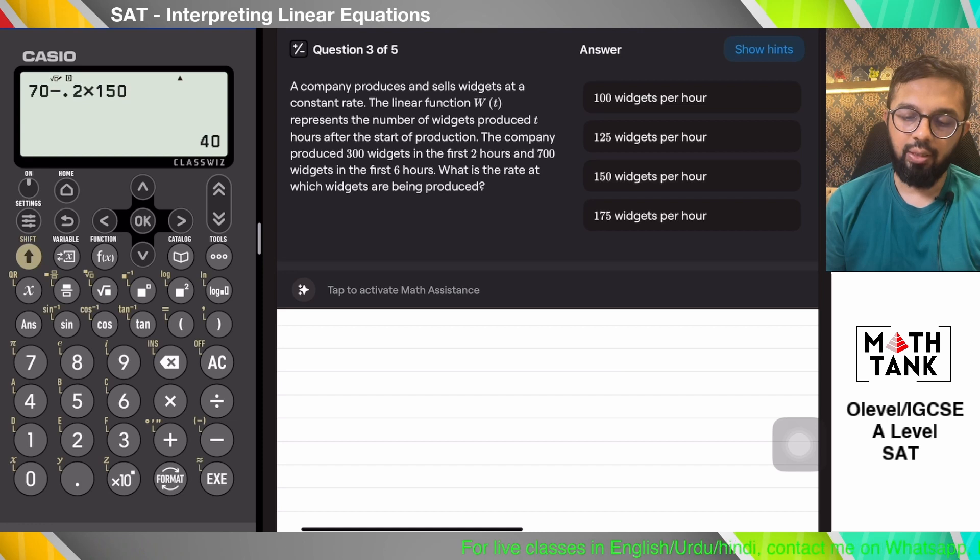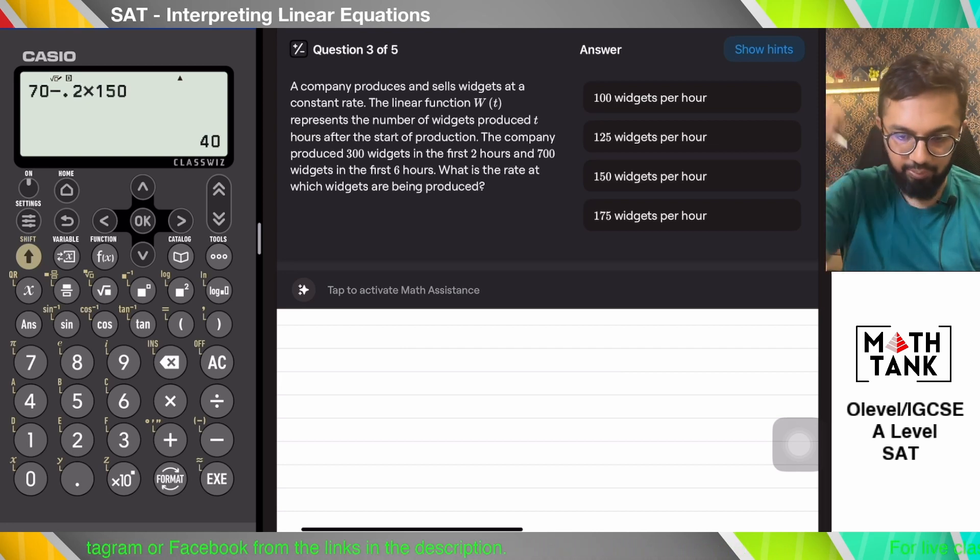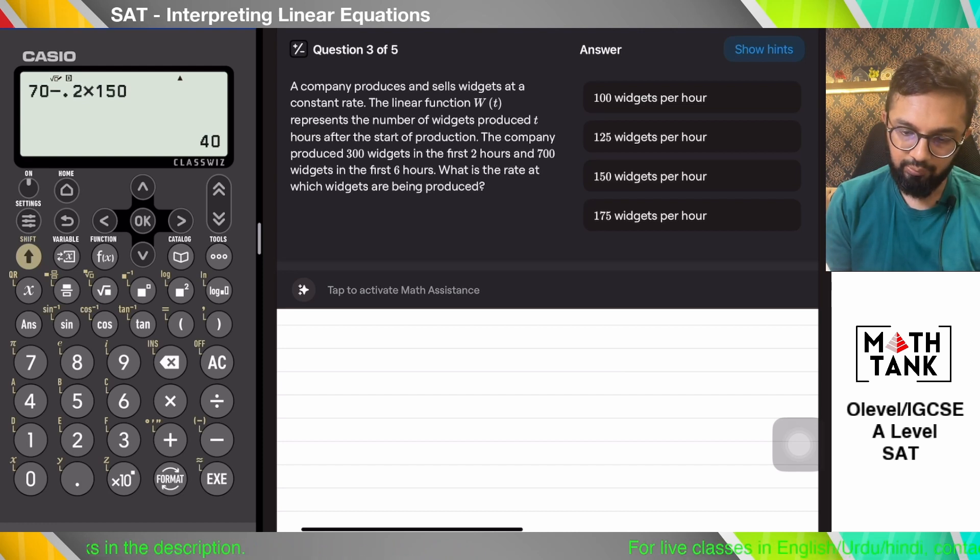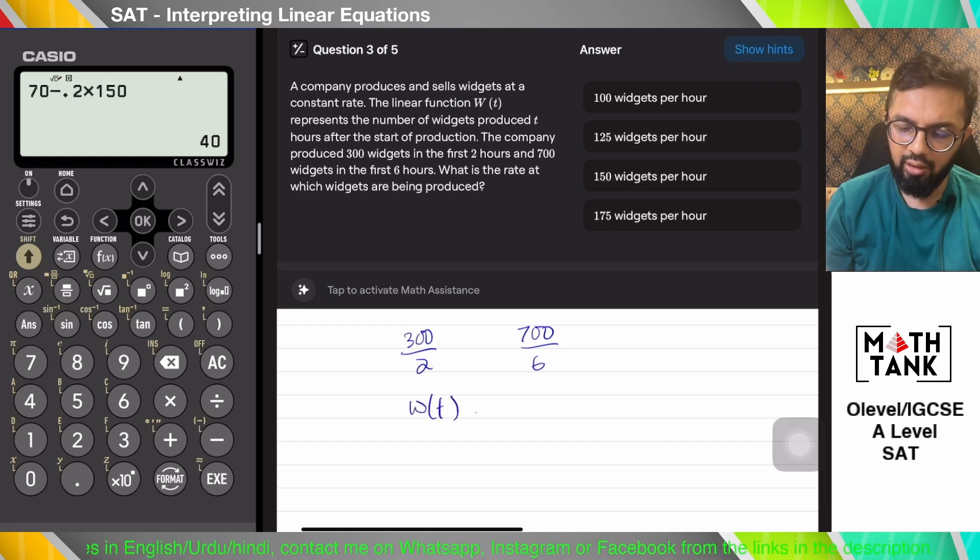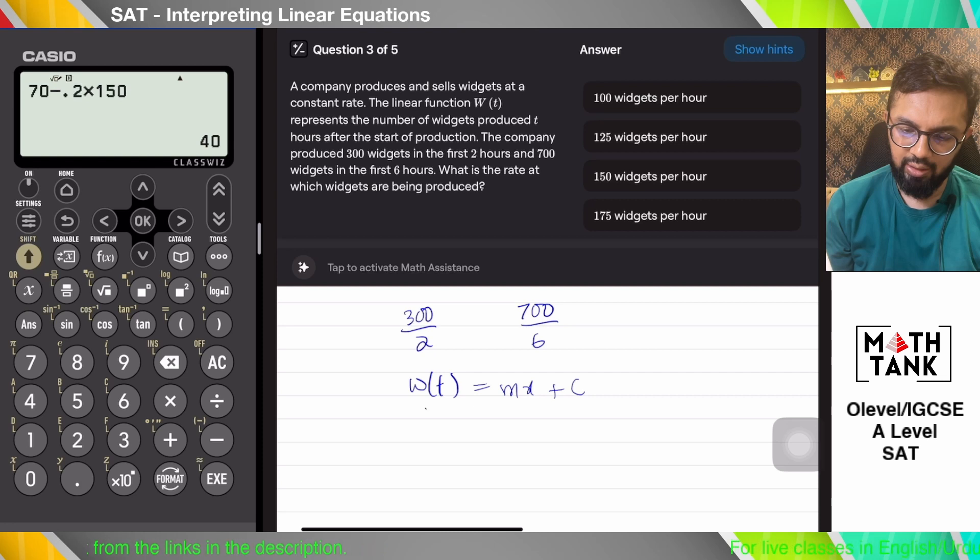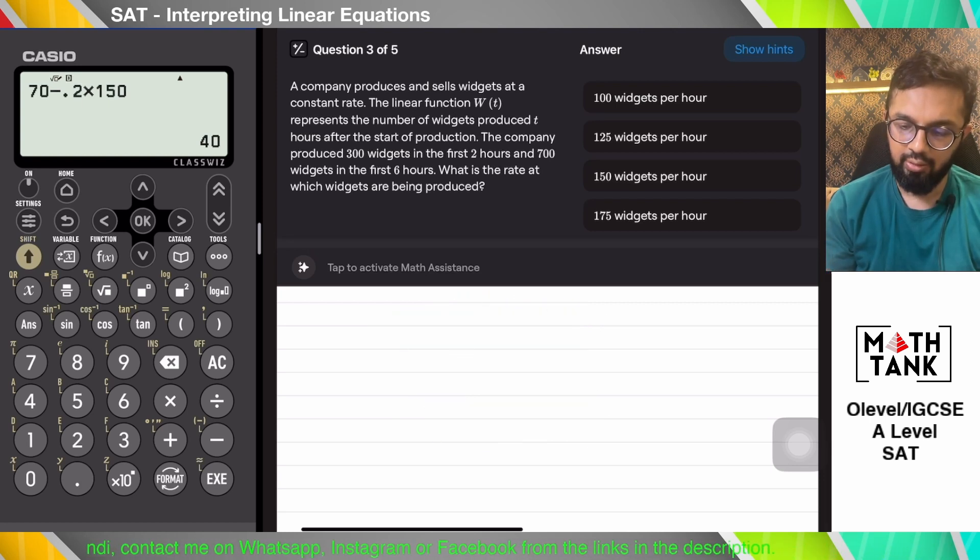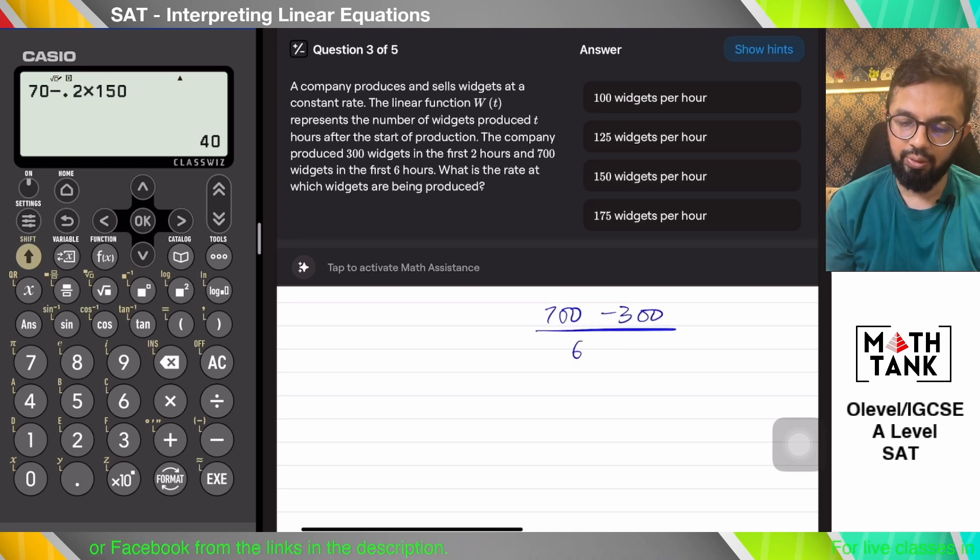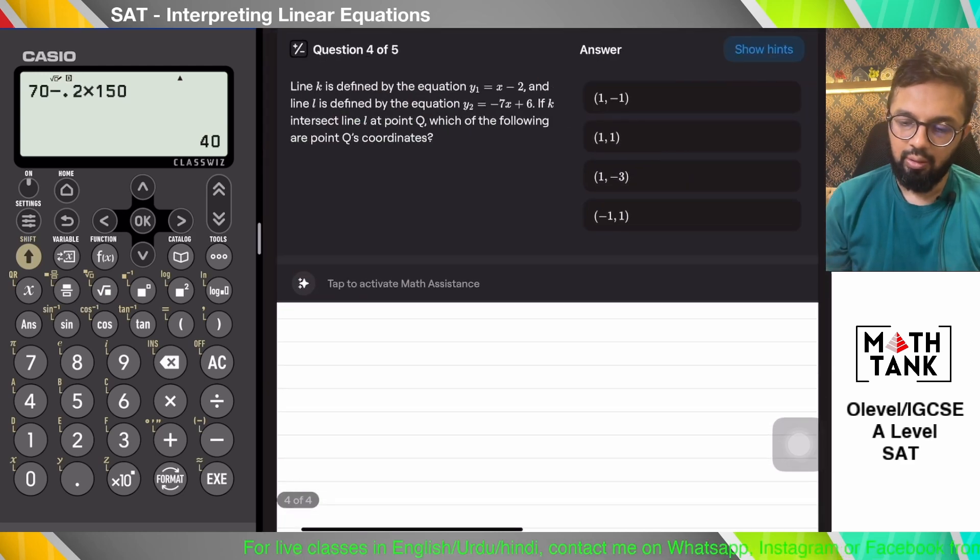A company produces and sells widgets at a constant rate. The linear function W(t) represents the number of widgets the company produces. The company produces 300 widgets in the first two hours and 700 widgets in the first six hours. What is the rate at which widgets are being produced? If I have a linear function, it should be mx plus c. So I'm going to calculate the slope: 700 minus 300 over 6 minus 2, which is y2 minus y1 over x2 minus x1. That's 400 over 4, which is about 100 widgets per hour.